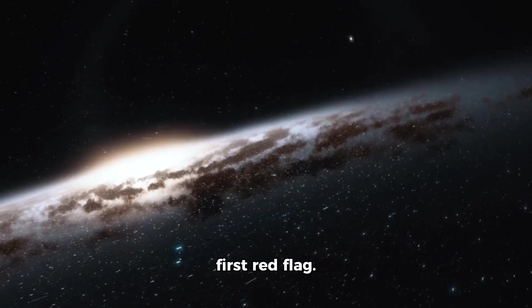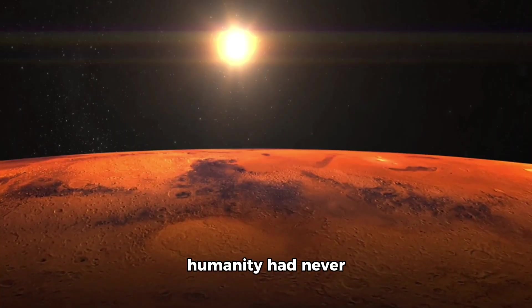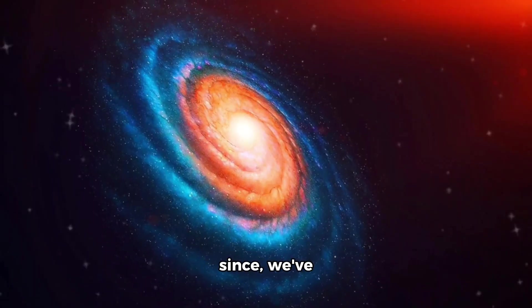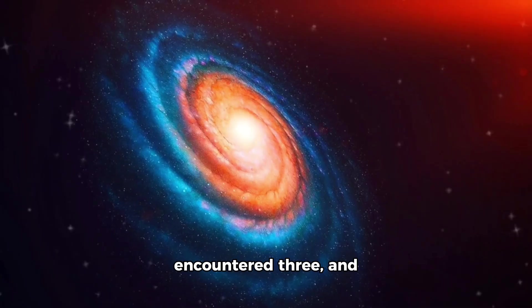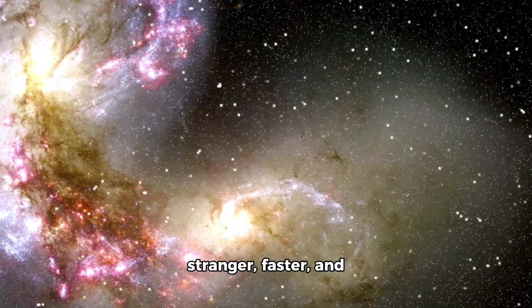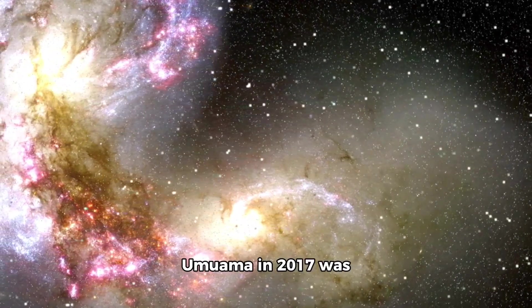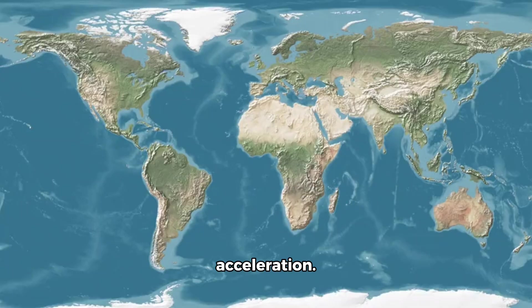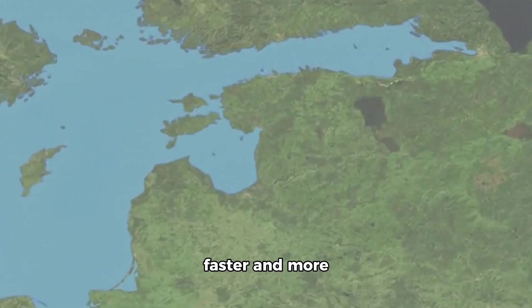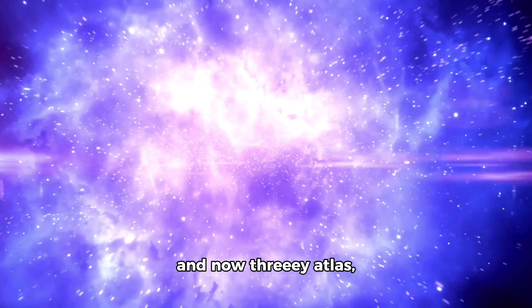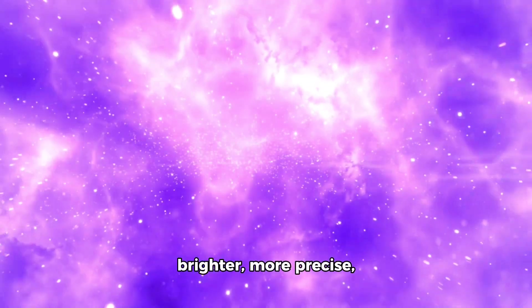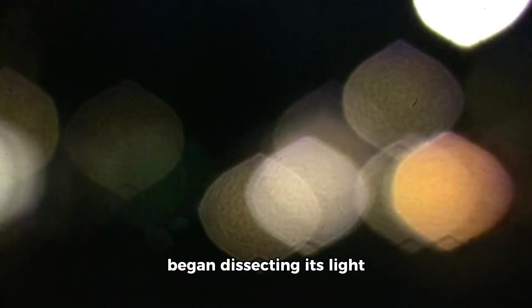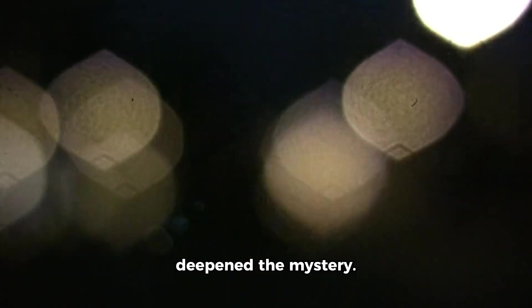The timing was the first red flag. Before 2017, humanity had never detected an interstellar object. In the short years since, we've encountered three, and each one has been stranger, faster, and more baffling than the last. Oumuamua in 2017 was elongated and moved with unexplained acceleration. Borisov in 2019 was faster and more volatile, and now 3i Atlas brighter, more precise, and far more unsettling. The James Webb's instruments began dissecting its light signature, but the data only deepened the mystery.